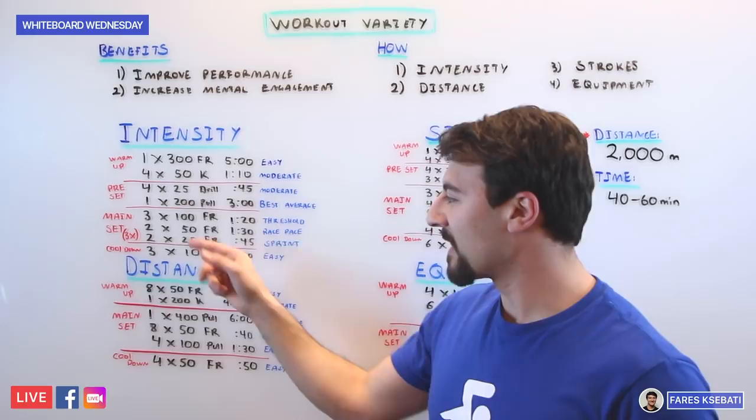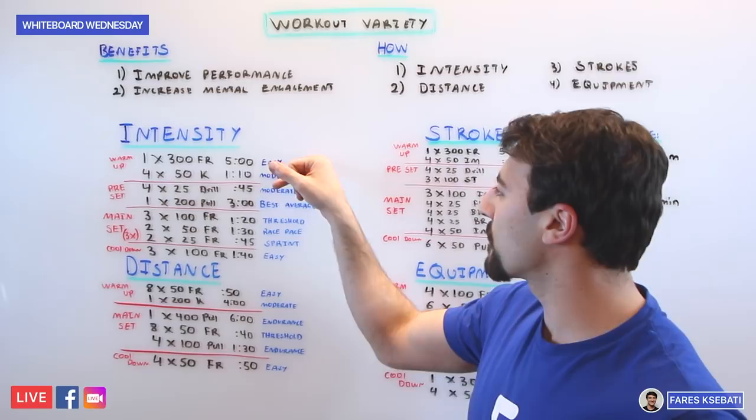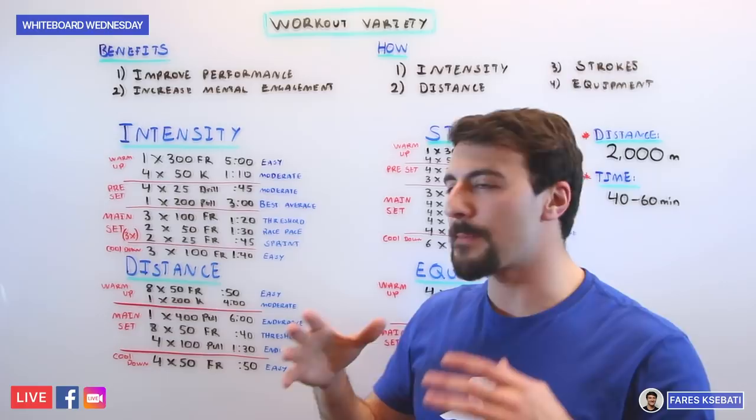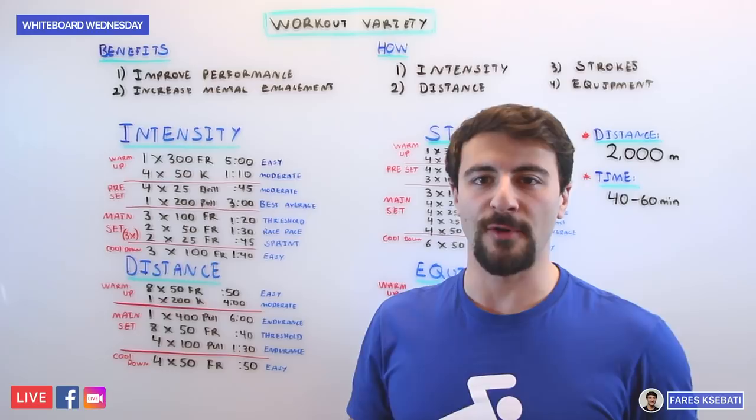So if you look at this workout, you're going through all seven zones, both anaerobic and aerobic. You're starting with easy, moderate swimming, moving into best average to get the heart rate up at the end of the preset. And then in the main set you're going to alternate between threshold aerobic short rest swimming, and then you're going to go race pace, sprint, SP2, SP3 type swimming, really maximizing your heart rate and your aerobic and anaerobic output. So this is one workout, 2,000 meters, focused on varying your intensity.